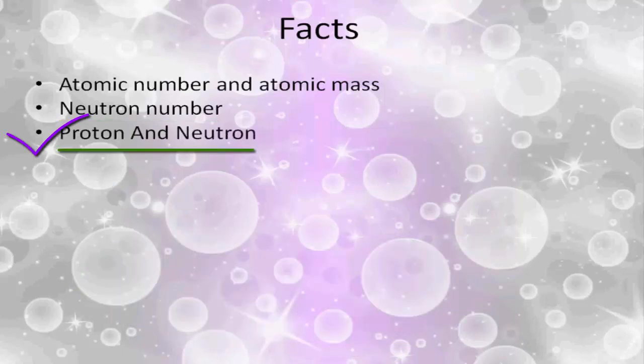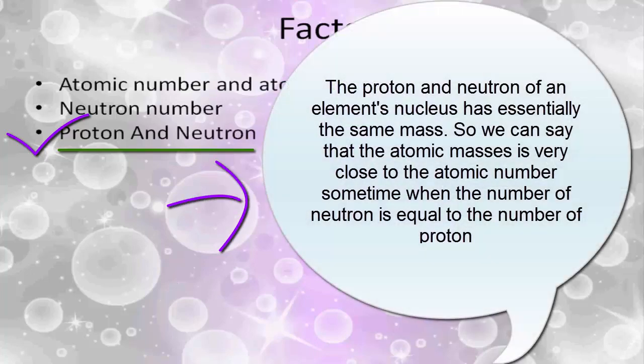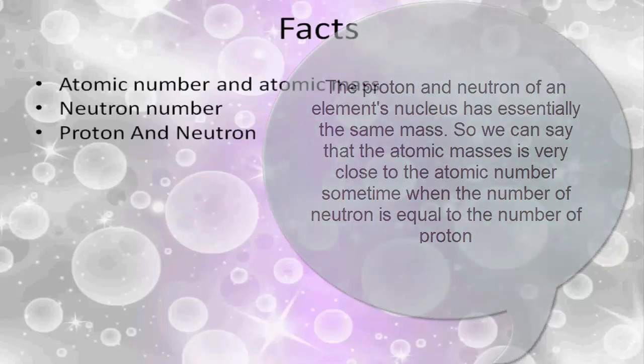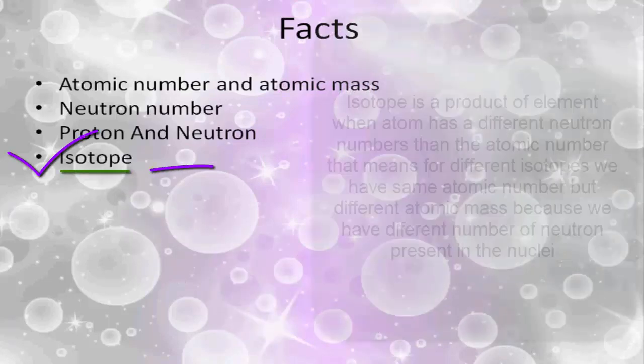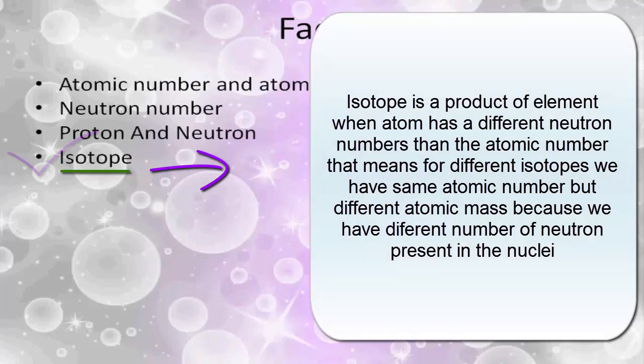Third, we can talk about the proton and neutron. The proton and neutron of an element's nucleus have essentially the same mass, so we can say that the atomic mass is very close to the atomic number sometimes when the number of neutrons is equal to the number of protons. Next we should talk about the isotopes. Isotope is a product of element when atoms have different neutron numbers than the atomic number.